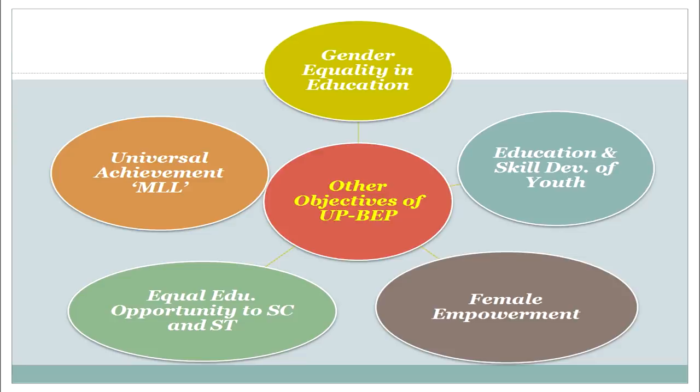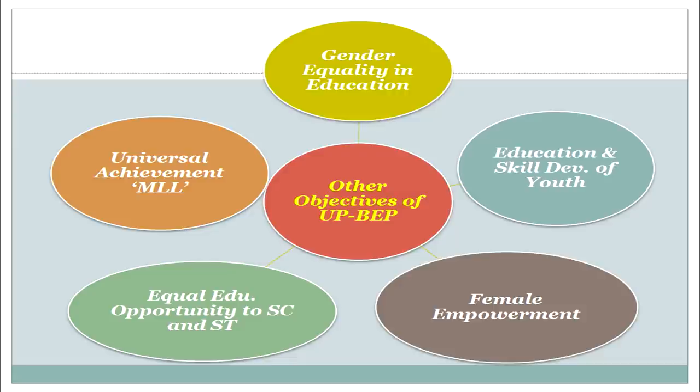Another major objective of the UP Basic Education Project is equal educational opportunities for SC and ST students. The socially deprived classes in Uttar Pradesh should not be deprived of educational opportunities; they should be given equal and equitable chances to be in the mainstream and to get education through different means. In summary, the five additional objectives are: universal achievement (MLL), gender equality, education and skill development of youth, female empowerment, and equal opportunities for SC and ST students.